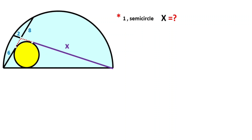In this video we have one circle and one semicircle. Here is given six units, here is given eight units, and here is two units. These are tangent points and x is what we need to find.